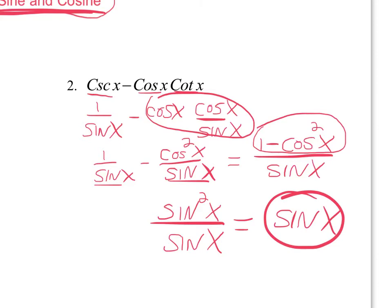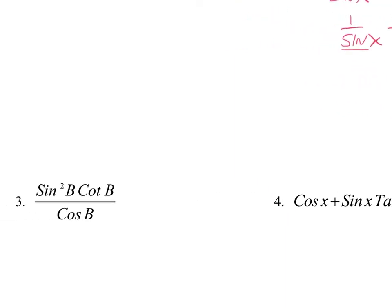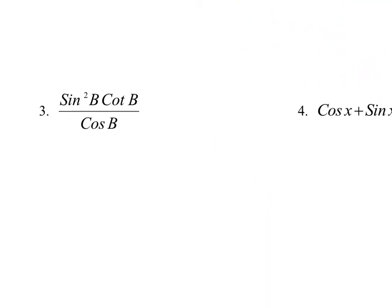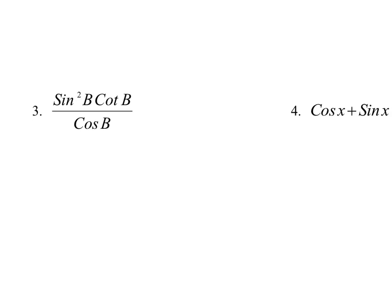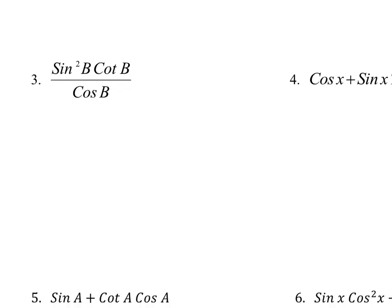That was number two. Let's do number three. Again, nothing is going to work. You can't pull out a common trig function — we have three different trig functions: cosine, cotangent, and sine. You're not even adding or subtracting, so you can't pull out a common trig function. There's no Pythagorean identities. You only have sine squared, but there's no cosine squared or plus one. You're not adding or subtracting fractions, so there's no LCD. The only thing you can do is put everything in terms of sine and cosine. The only thing I have to change is the cotangent.